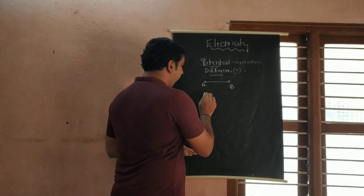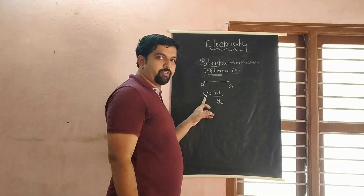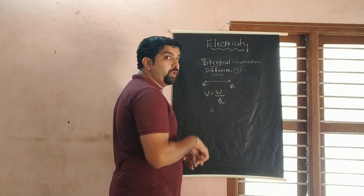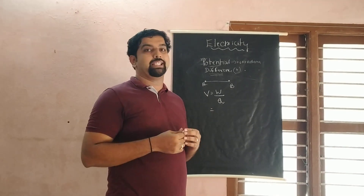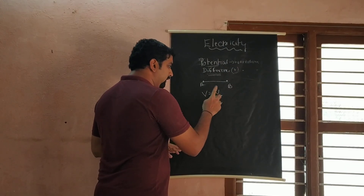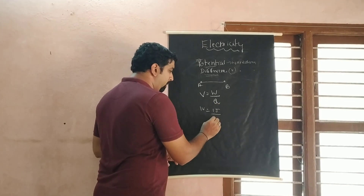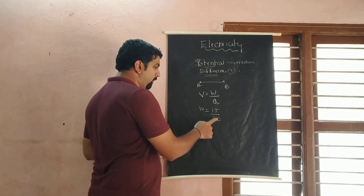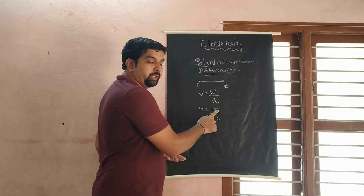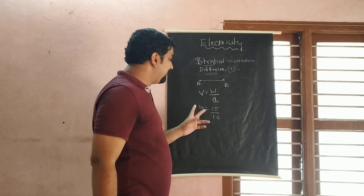The symbol for potential difference is V and the formula is V = W / Q, where V is potential difference, W is the work done, and Q is the quantity of charge. The unit of potential difference is volt. One volt equals 1 joule divided by 1 coulomb. So if 1 joule of work is done to take a charge of 1 coulomb from one point to another, then the potential difference is said to be 1 volt.